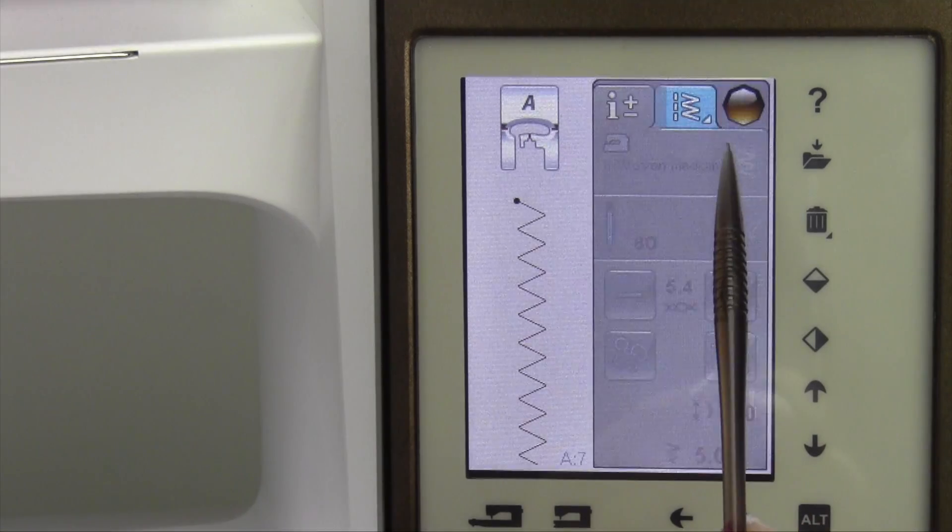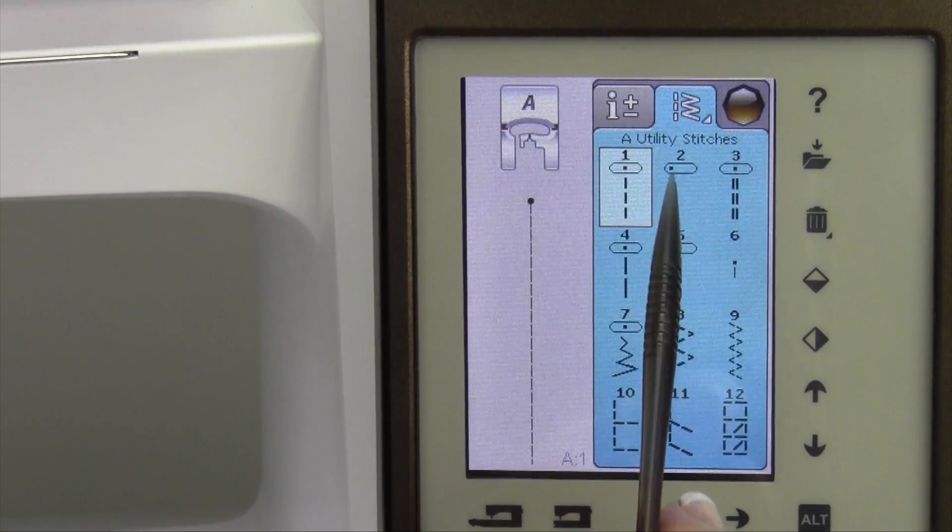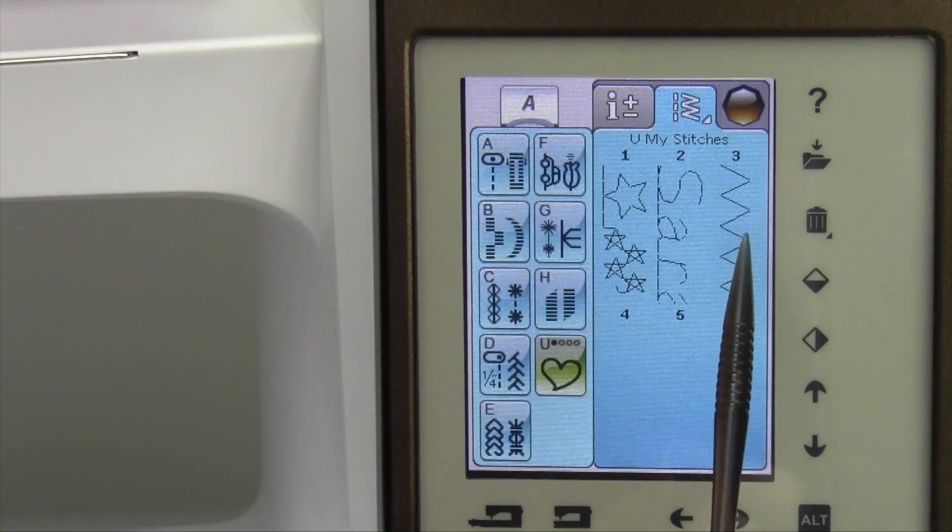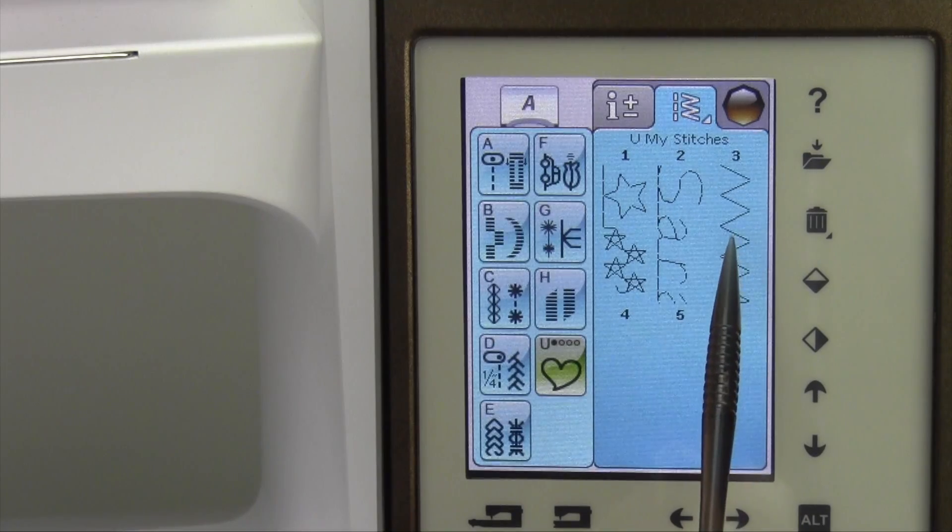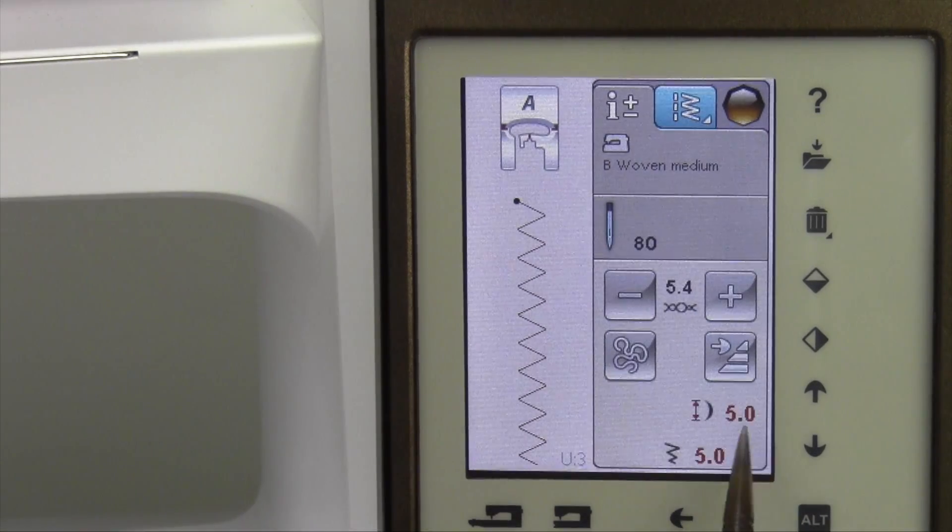Then when you are sewing along, let's just go back, we're going straight stitch. Now we want to go to the U stitches. We can go over here to U. Then as soon as we pick our stitch number 3 over here, it is set for the settings we use it at.